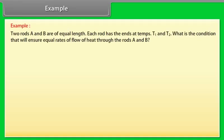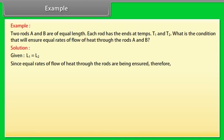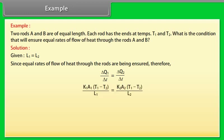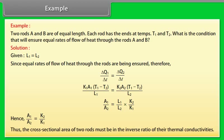Example — thermal conductivity: Two rods A and B are of equal length, each with ends at temperatures T1 and T2. What condition ensures equal rates of heat flow through both rods? Given L1 = L2, for equal rates: ΔQ1/Δt = ΔQ2/Δt. Solving gives A1/A2 = (L1/L2) × (K2/K1), and since L1 = L2, we get A1/A2 = K2/K1. Thus, the cross-sectional areas of the two rods must be in the inverse ratio of their thermal conductivities.